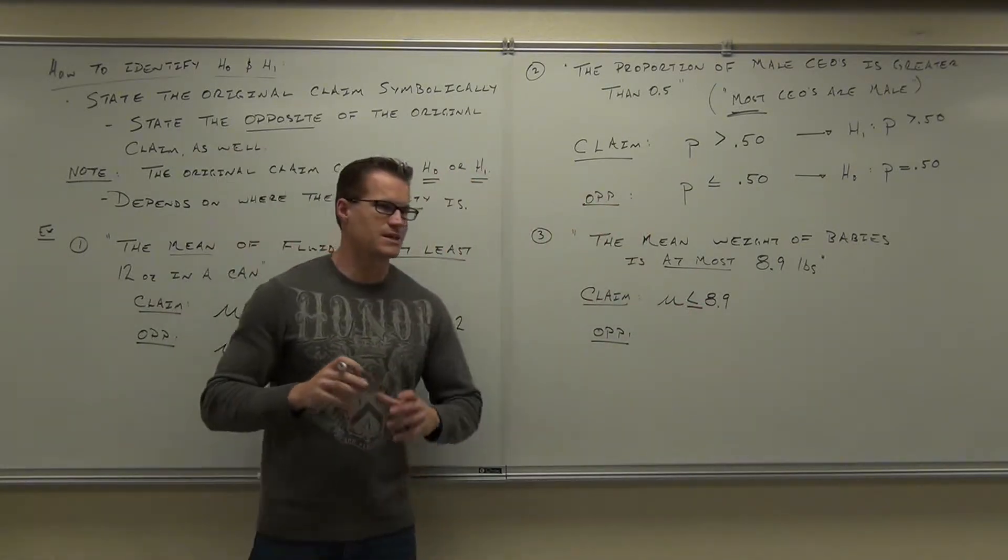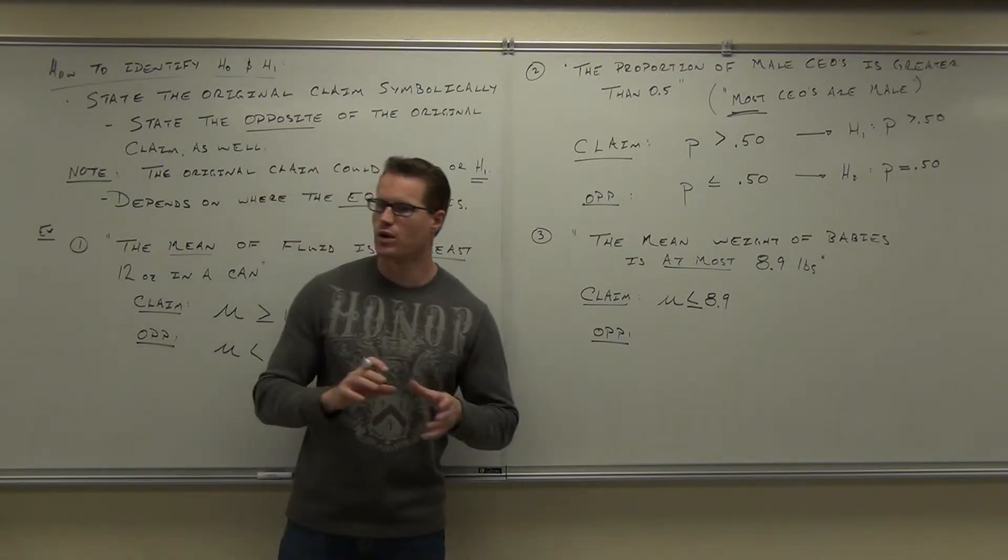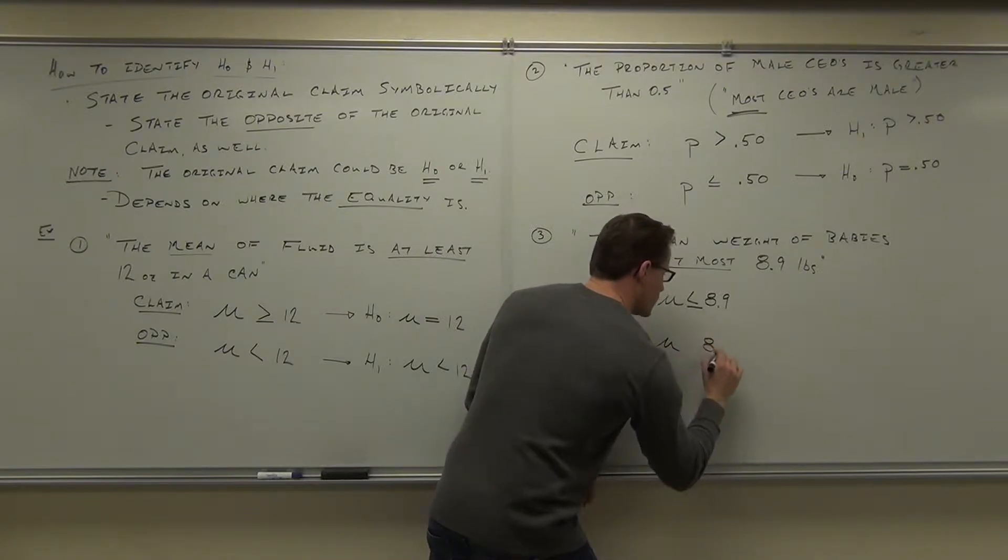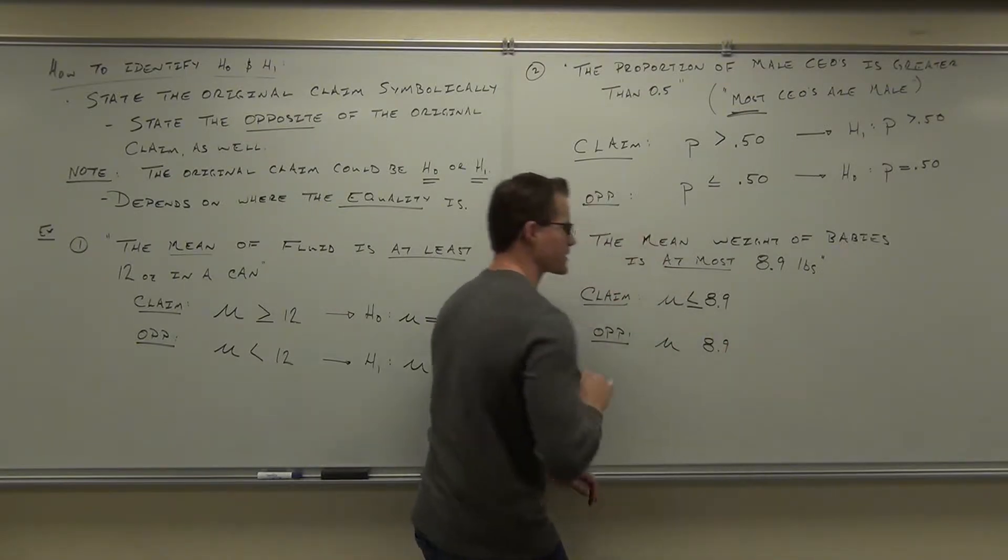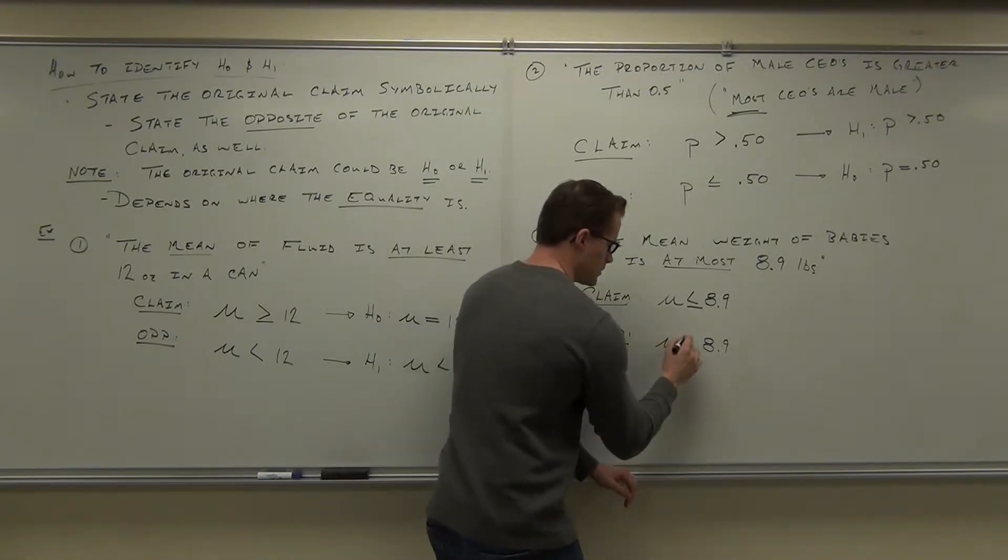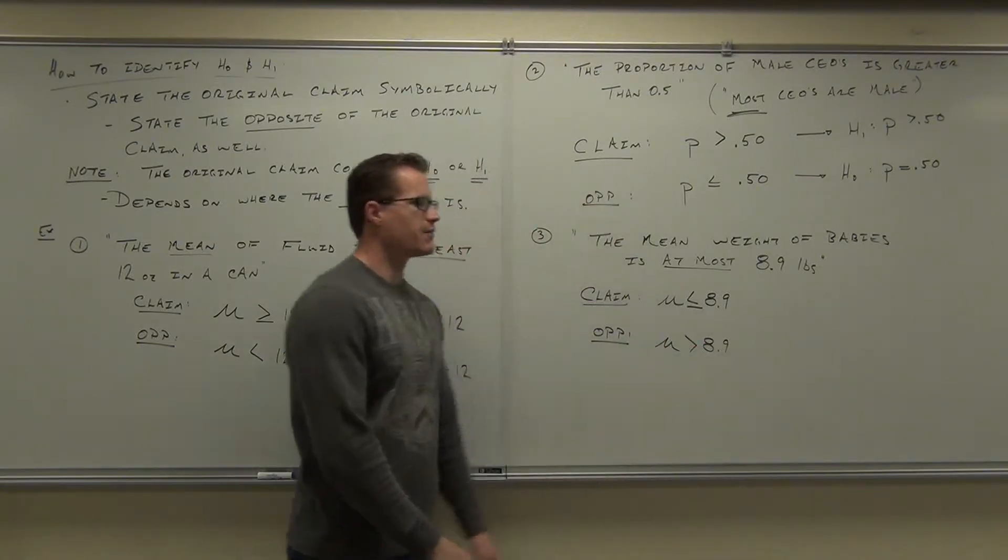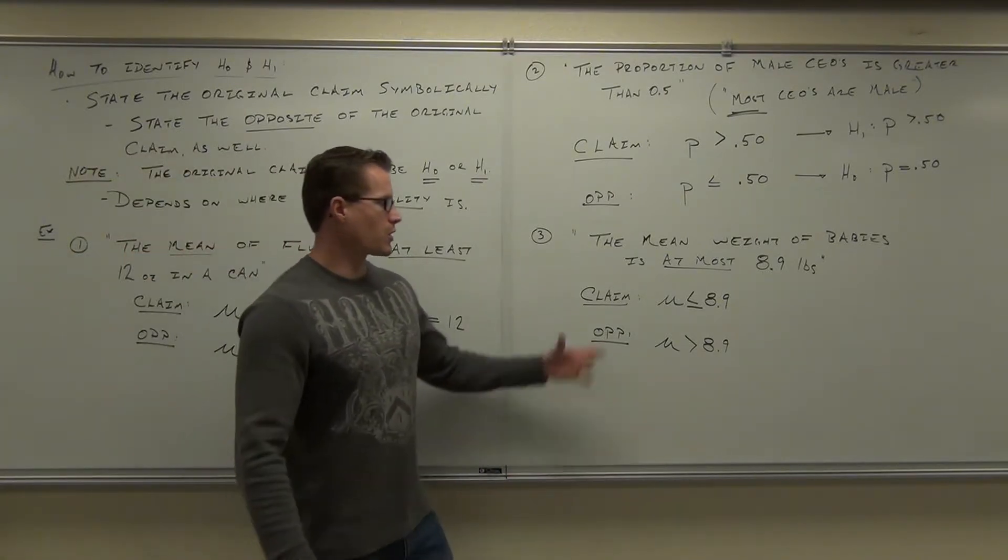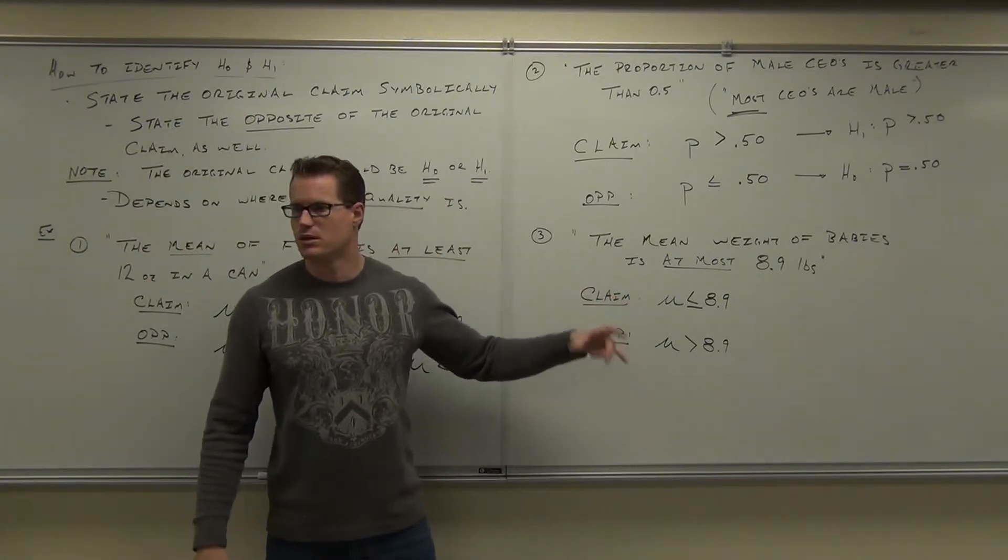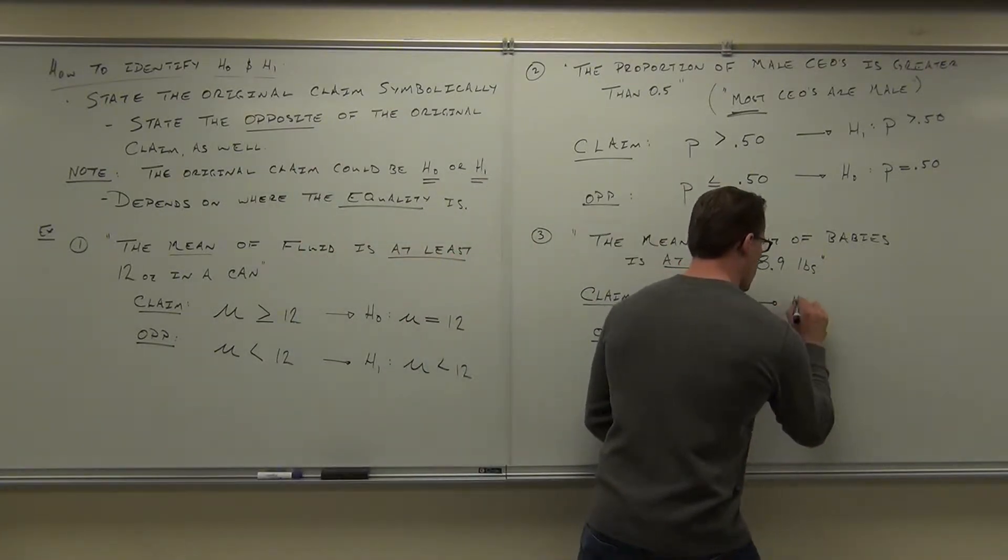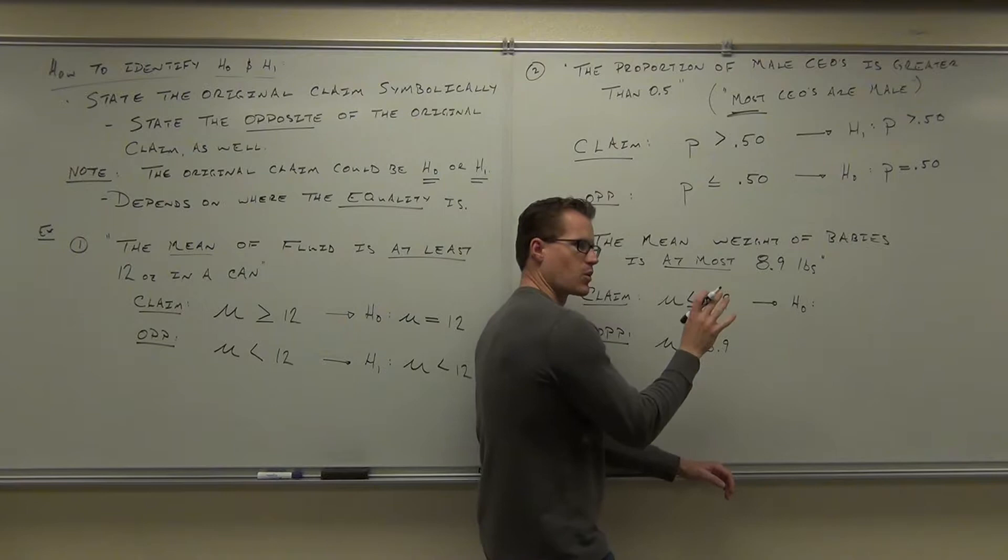That's important because that dictates what your H sub 0 is and what your H sub 1 is. This is one of the most important steps you can do. After that, state the opposite. What's the opposite of μ is less than or equal to 8.9? Greater than. Strictly greater than. You can't ever have an equal in two spots. Which one is our H sub 0? The claim or the opposite? Which one? Because the equal sign is right there. We're going to say H sub 0.